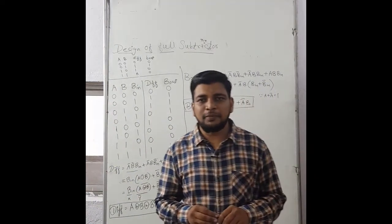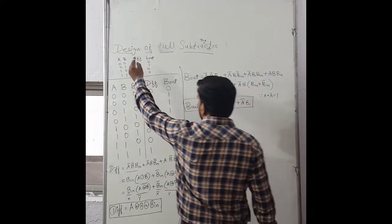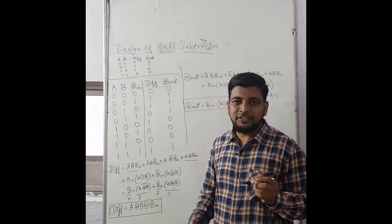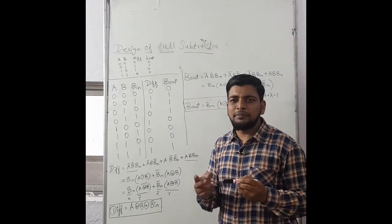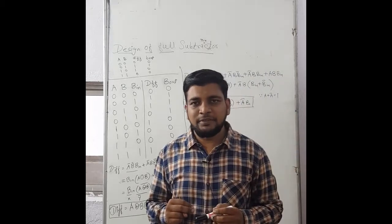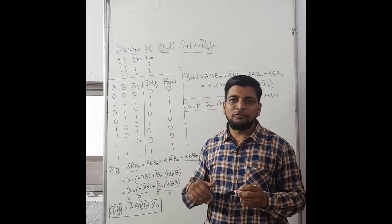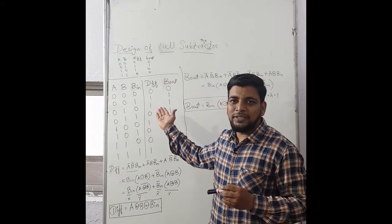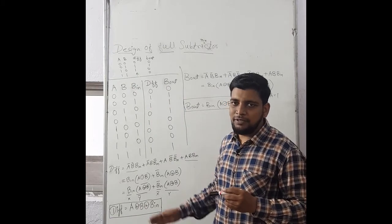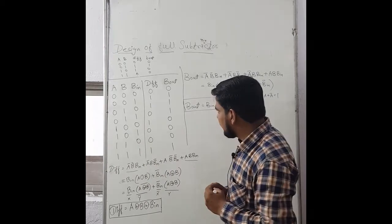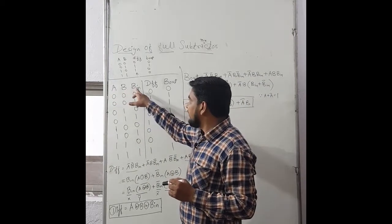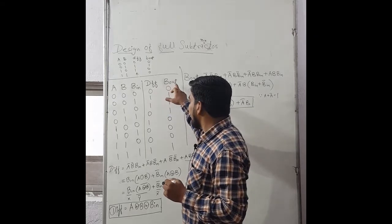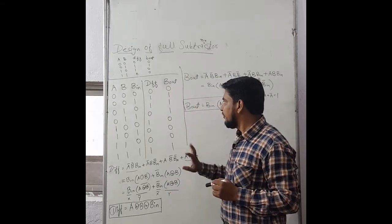In the last video we studied the half subtractor. In this session we are going to design the full subtractor. The difference between half subtractor and full subtractor is that in the half subtractor we only subtract two variables A and B, and the borrow generated is not forwarded to the next stage. In the full subtractor, the previous borrow is also considered. Two variables A and B are required along with the previous borrow B_in. The output is the difference and the current borrow B_out.